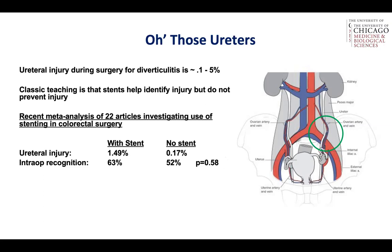This is clearly due to selection bias — surgeons who anticipated difficult dissection, perhaps a tumor or diverticulitis, placed a stent. Intraoperative recognition of a ureteral injury was about the same whether a stent was placed or not, which was somewhat surprising to the authors and consistent with other publications. This isn't conclusive given these are low-frequency events.